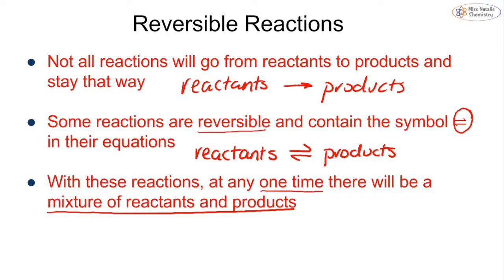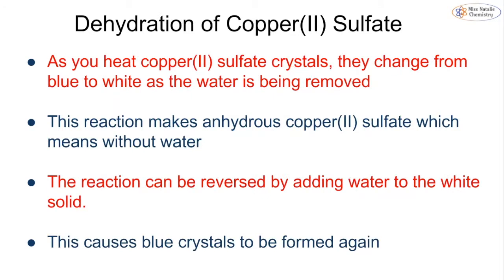Let's have a look at two key reactions that you have to know that are reversible. The first reaction is the dehydration of copper sulfate. You will have covered copper sulfate in topic 2H on chemical tests. If you remember, this was a test for water. If you heat copper sulfate crystals, they will change from blue to white, and this happens because we are removing water. We are causing the blue hydrated crystals to become white anhydrous crystals. Remember, anhydrous simply means without water.